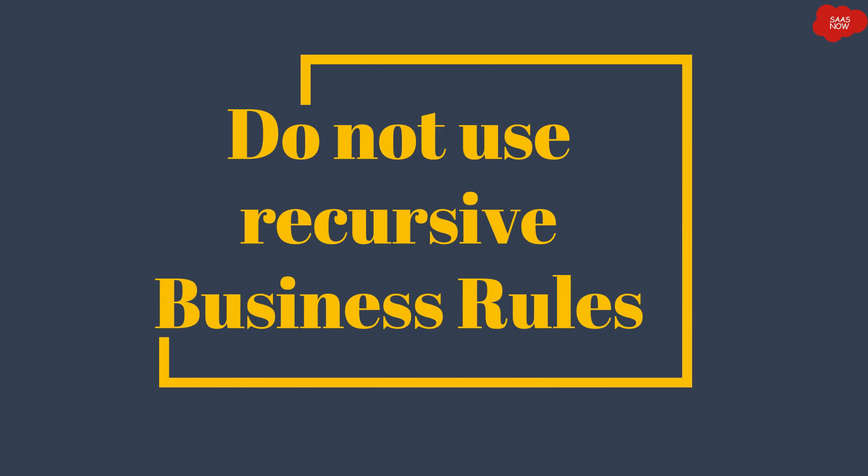The next best practice is do not use recursive business rules. You should not use current.update() in a business rule script, because the update method triggers business rules to run on the same table for insert and update operations, which can lead to a business rule calling itself again and again. For a before business rule, you should not use current.update() — that's essentially mandatory.